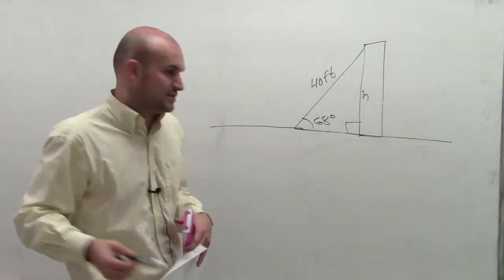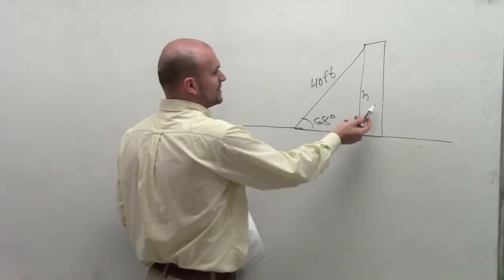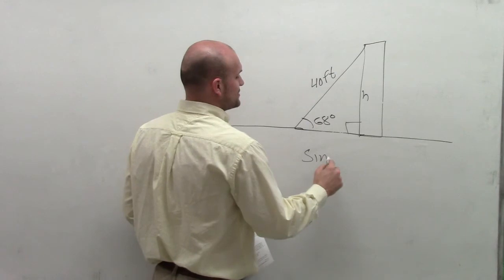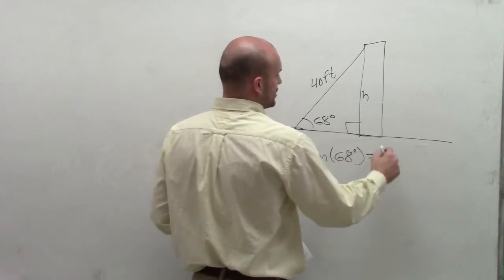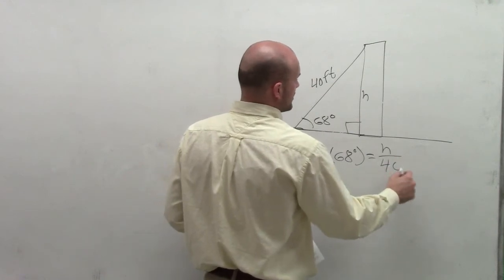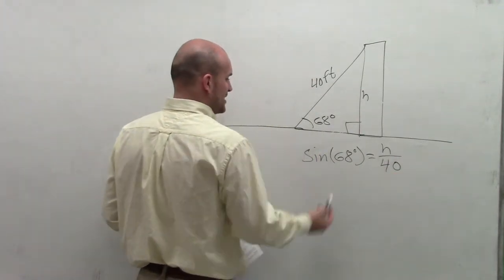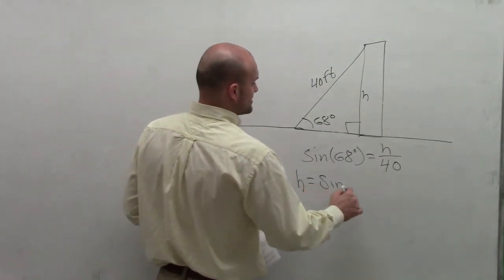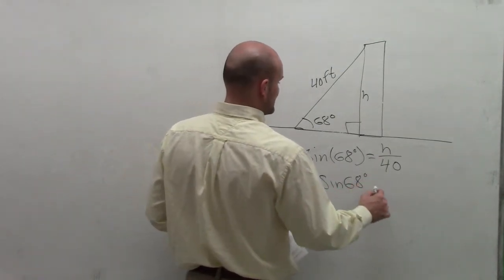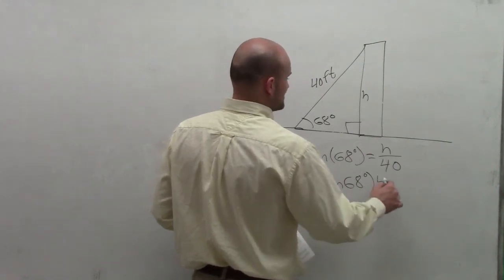What is the trigonometric function that I need to use? Well, when you're dealing with opposite and hypotenuse, you use sine. The sine of 68 degrees equals the opposite over the hypotenuse. So sin(68°) = h/40. Multiply 40 on both sides and you get h equals the sine of 68 degrees times 40.